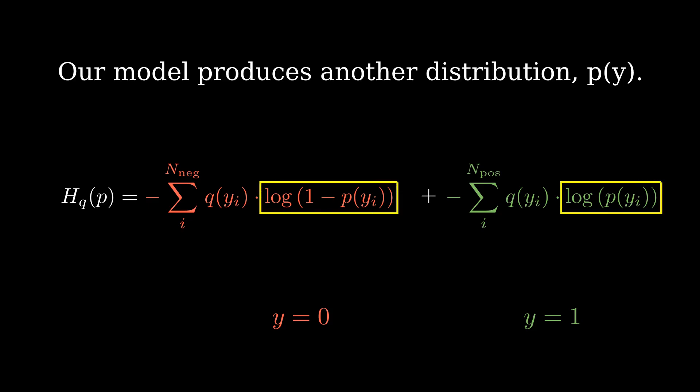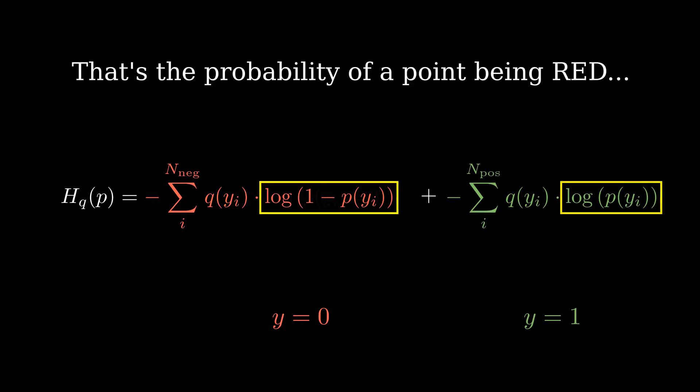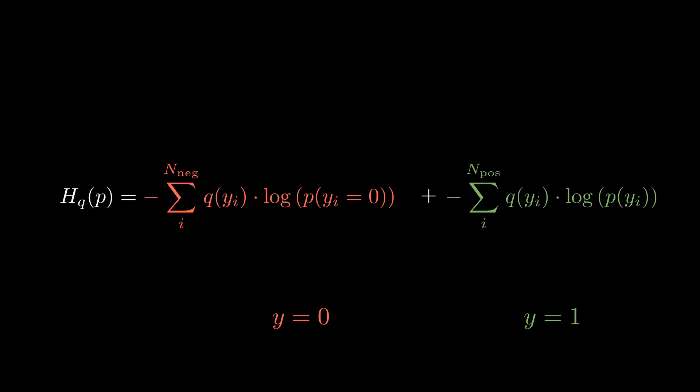The loss itself is computed using the probabilities p of y produced by a model. That's the probability of a point being red, and that's the probability of a point being green.